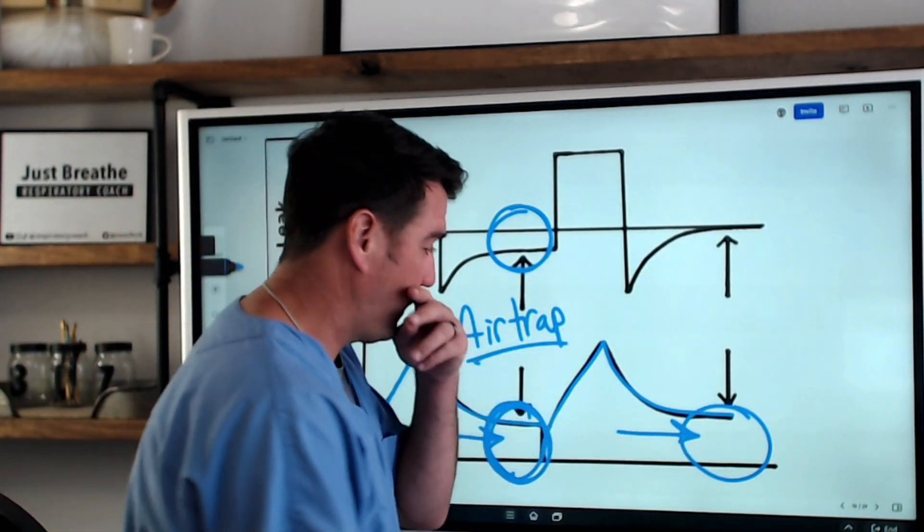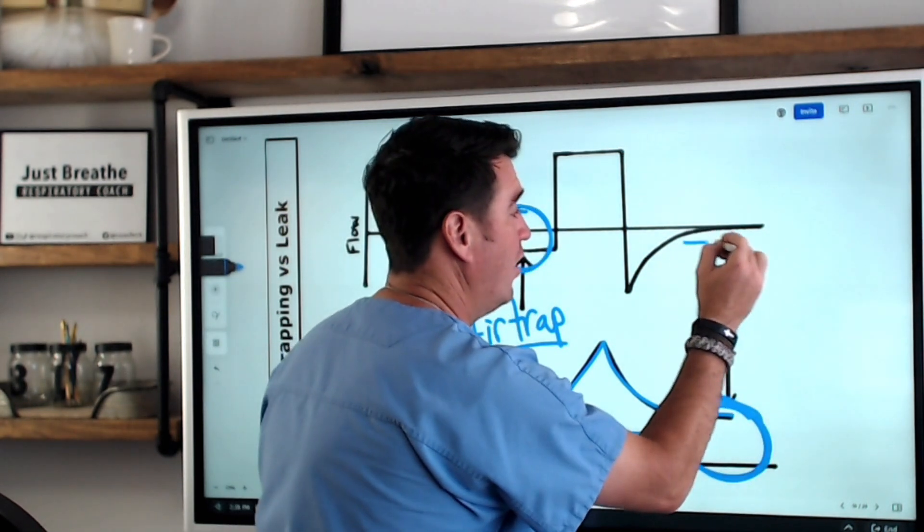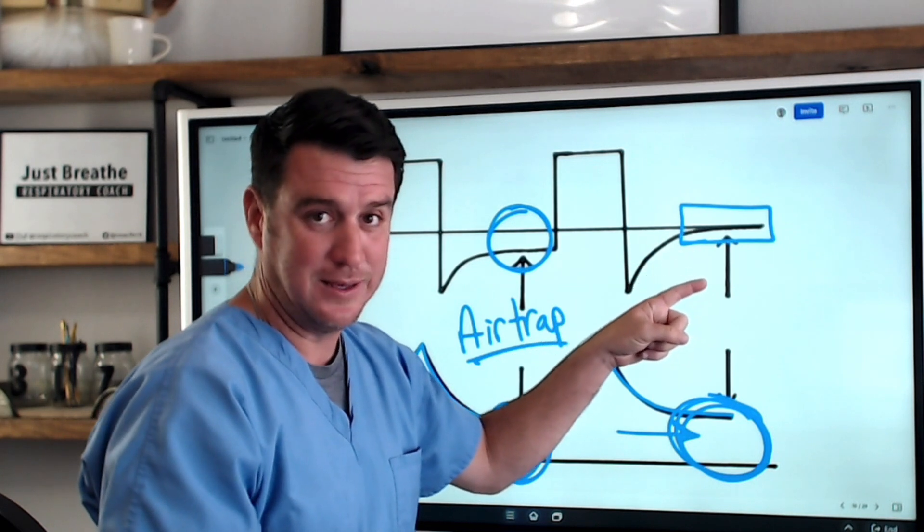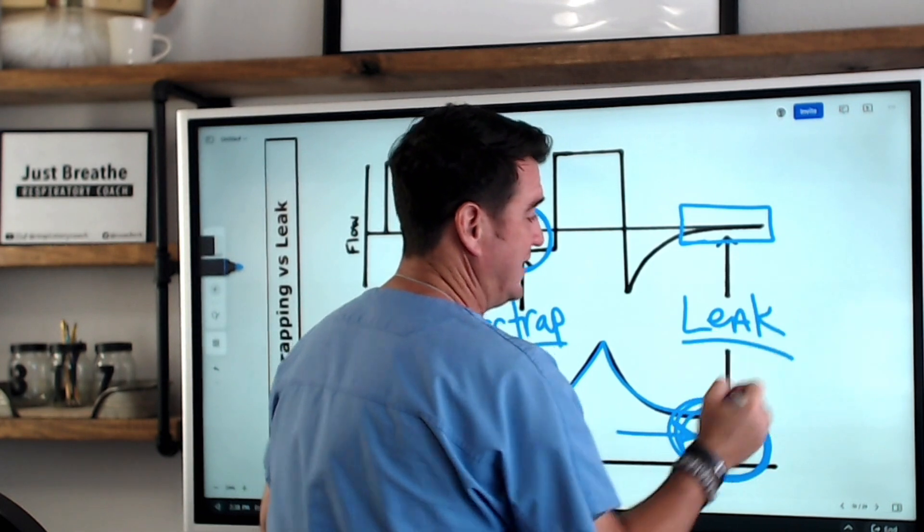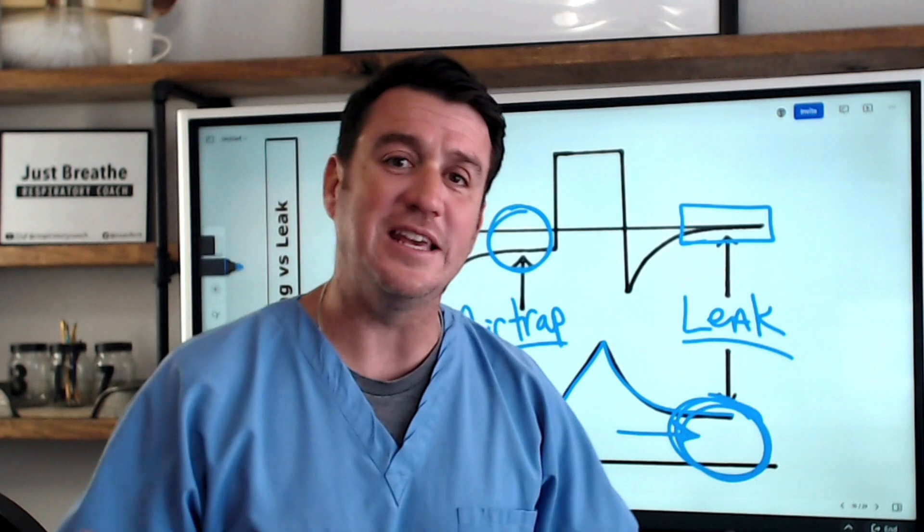Now look what's happening over here. Volume is not returning to baseline. But flow is, which tells you this is associated with a leak. Now, what does a leak mean?